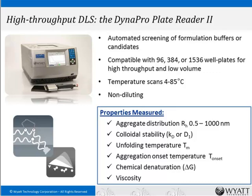The DynaPro Plate Reader 2 is unique in that it performs dynamic light scattering directly in micro-well plates without any additional fluid handling, so you can run through hundreds of different conditions. You can run temperature ramps to assess conformational stability, and it is a non-diluting technique — as opposed to, for instance, size exclusion chromatography, where dilution can impact the properties.